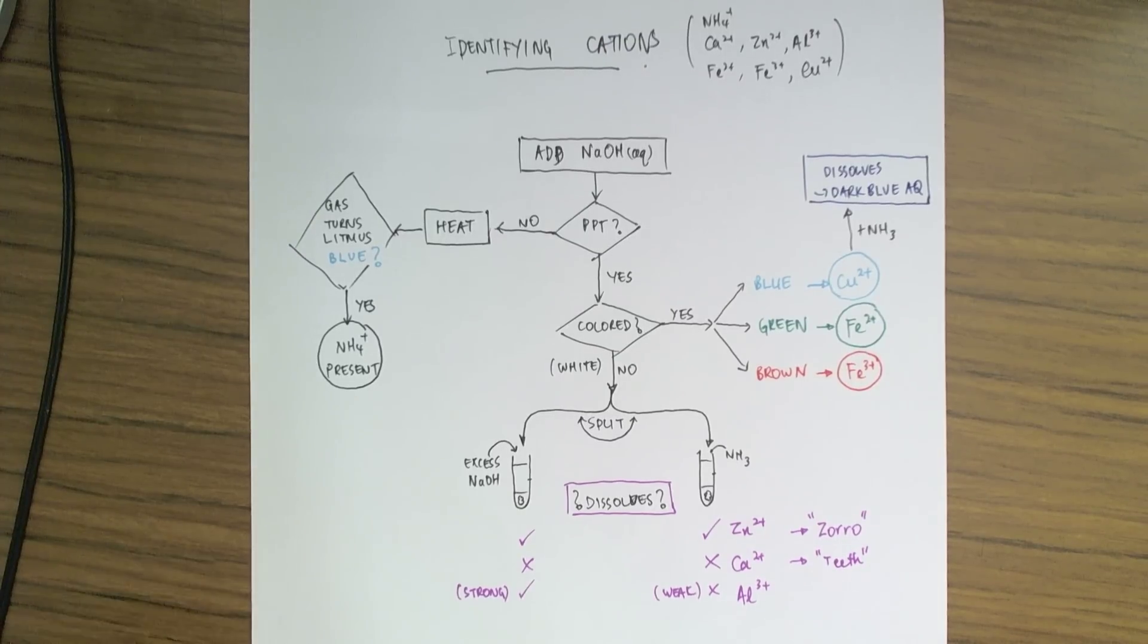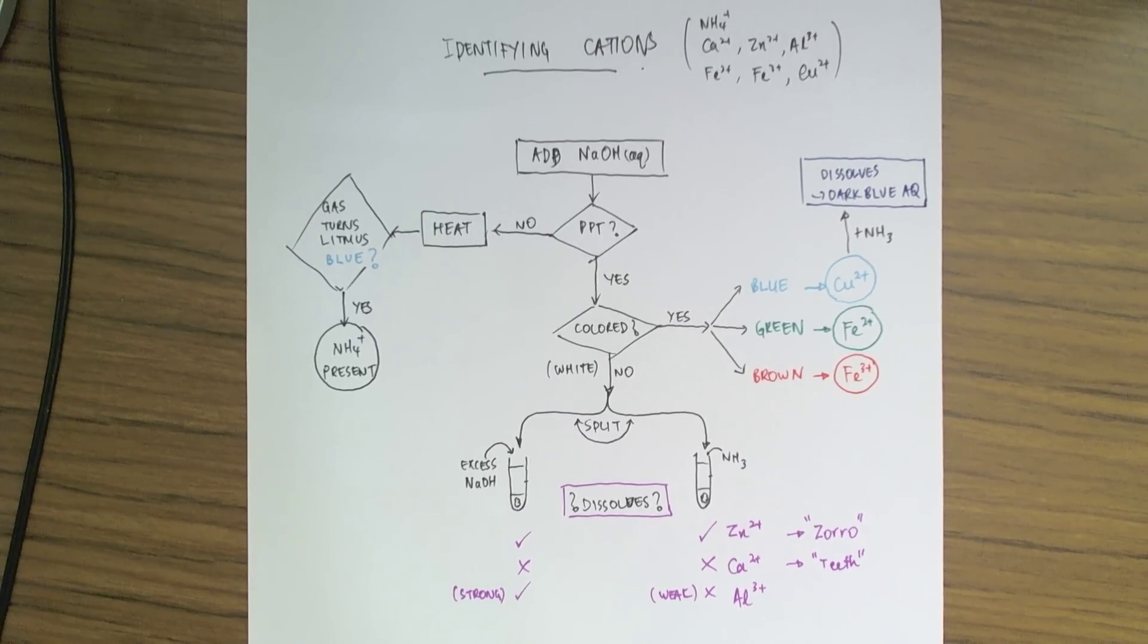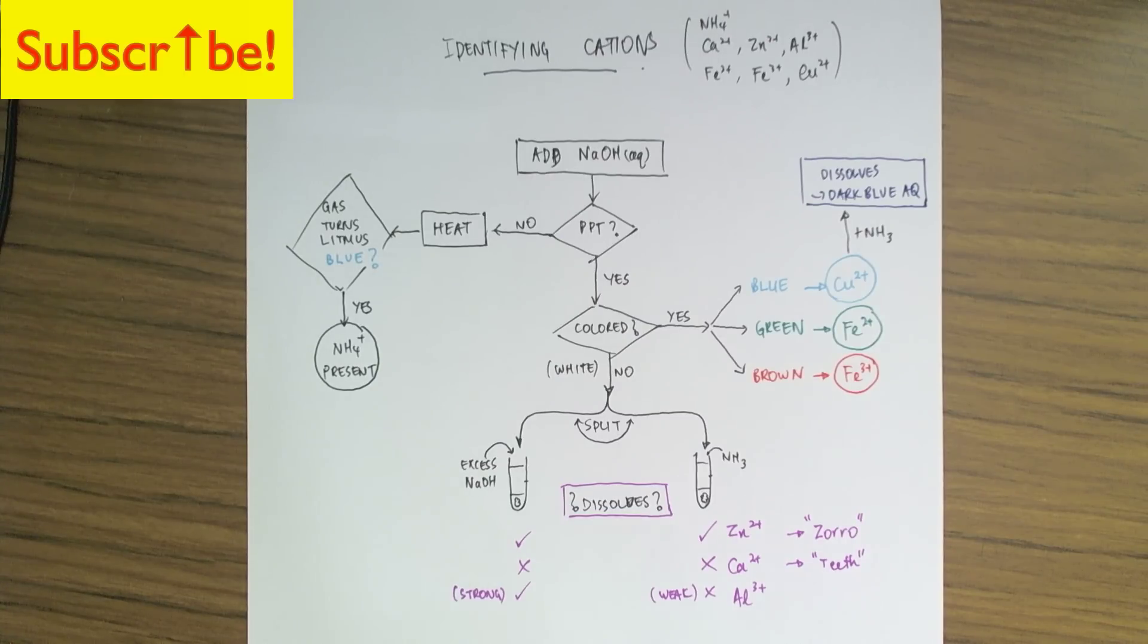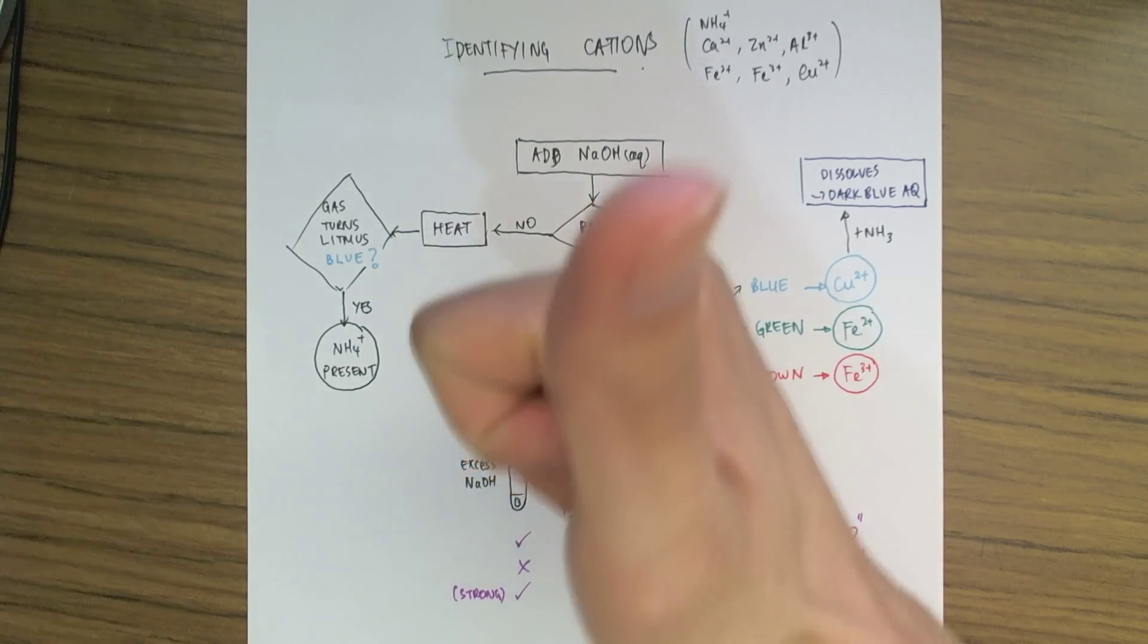So here we have the overall flowchart to help us distinguish between these seven cations that I picked out to take a look at as examples of how we can identify cations in the lab. So I hope that was really helpful. Don't forget to subscribe, give a thumbs up on this video, and leave a comment below. Let me know what you think or if you have any questions, and I hope to see you guys around.